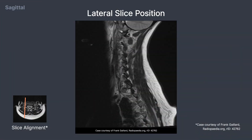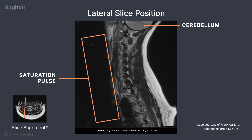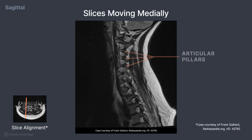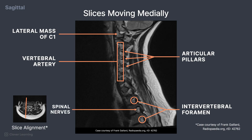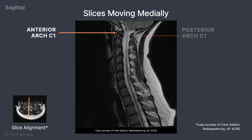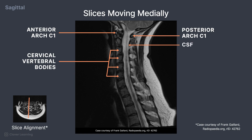Starting with the sagittal view, slices start laterally. We can see the cerebellum located superiorly. You can see the dark line anteriorly, which indicates a saturation pulse was used to reduce swallowing motion. Moving medially, you can see the articular pillars, made up of the superior and inferior articular process forming the zygapophyseal joint. You can also see the profile of one of the vertebral arteries. Towards the top of the image, the lateral mass of C1 is visible. Looking inferiorly, you can see the intervertebral foramen, where the spinal nerves exit the spine. As we move medially, the anterior arch and posterior arch of C1 are visible, along with slices through part of the cervical vertebral bodies. The CSF in the spinal canal appears bright because this is a T2-weighted image.